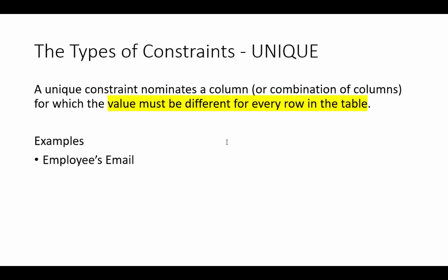First we look at the unique constraint. The value must be different for every row in the table. For example, employee emails — we want our employees to have individual email addresses, so no two employees can have the same email. We create this rule in the table on the email column.